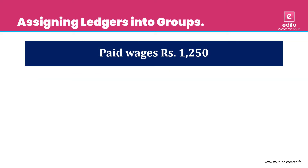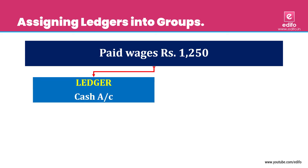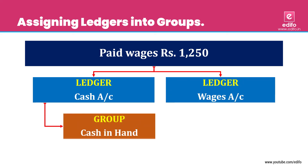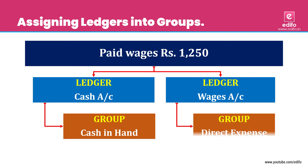Next transaction: paid wages, rupees 1,250. Two aspects: cash and wages. Cash belongs to 'Cash in Hand' and wages belongs to 'Direct Expense' group.